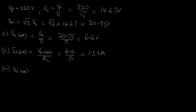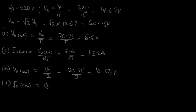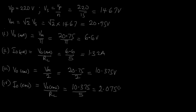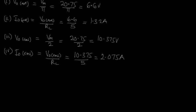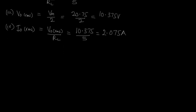Next, V_out RMS equals VM divided by 2, which is 20.75 divided by 2, giving 10.375 volts. Then I_out RMS equals V_out RMS over RL, which is 10.375 over 5, equal to 2.075 amperes.